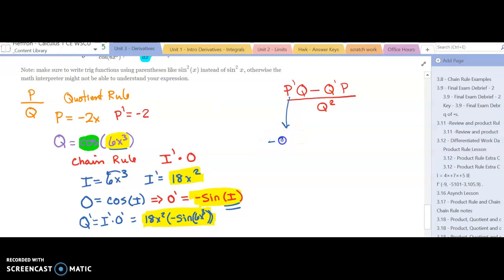So P prime is negative 2, Q is cosine of 6x cubed, minus Q prime. Here's our 18x squared, parentheses, negative sine of 6x cubed.